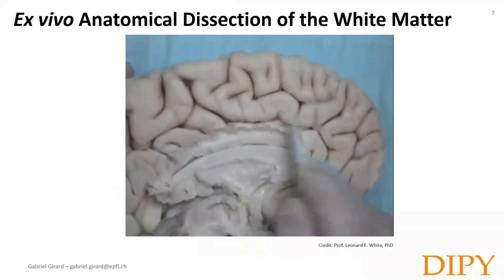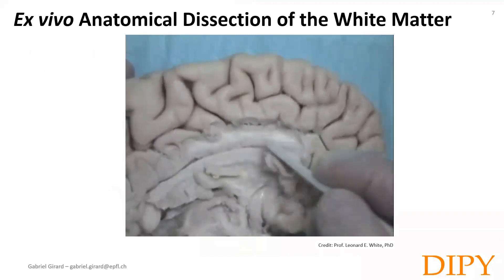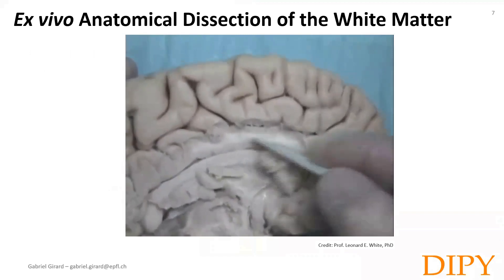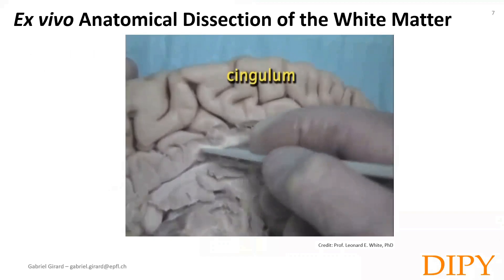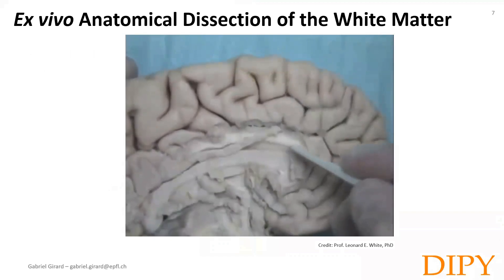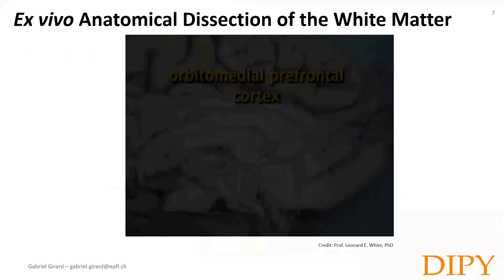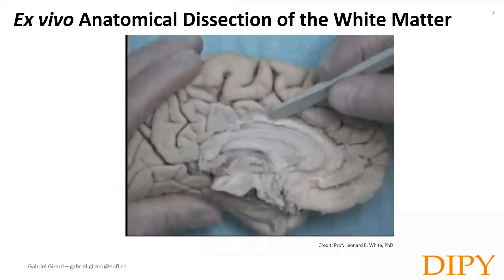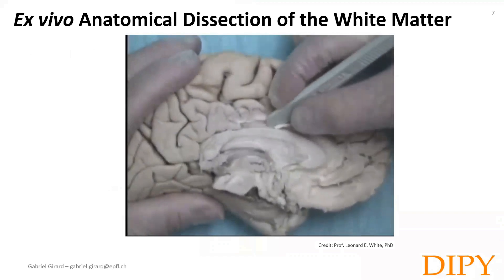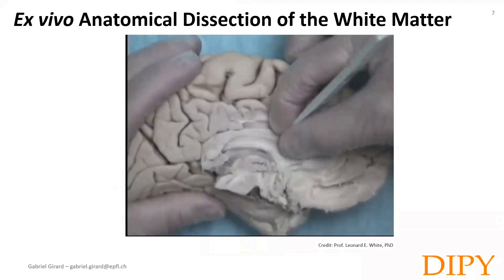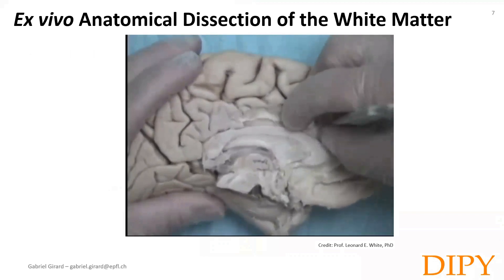Here's a clip from Professor Leonard E. White dissecting the white matter. He first removes the gray matter — the cell bodies — to reveal the axon bundles. You can see in this clip the fibrous structure of the white matter that diffusion MRI and tractography can be sensitive to.